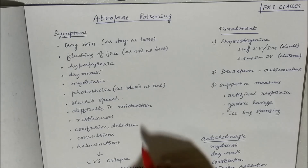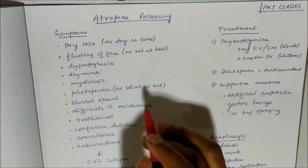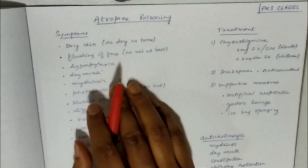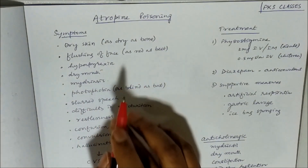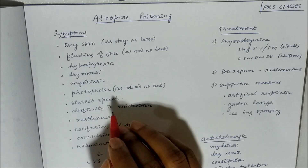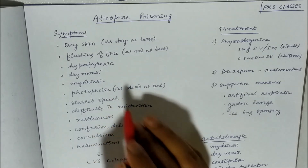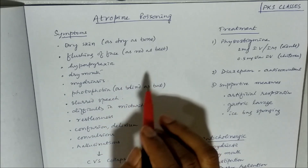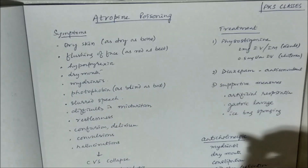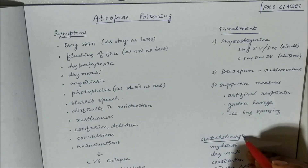In severe cases, atropine poisoning may lead to cardiovascular collapse, respiratory paralysis, and even coma. So how do we treat atropine poisoning? Since it is an anticholinergic drug, the antidote will be a cholinergic drug.